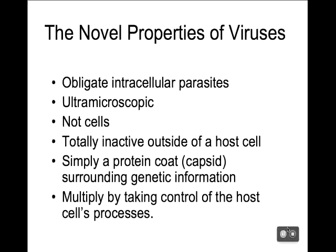How viruses work is they literally take over a host cell. During an infection, they're going to take over that host cell and turn it into a virus-making factory — that's the life cycle that a virus goes through. They are ultra-microscopic, in other words, extremely small. They are much smaller than bacteria. In order to see viruses clearly, you have to use an electron microscope; you cannot see them with a visible light scope. There are no cells in the viral structure — not prokaryote or eukaryote. They're just these little infectious particles, totally inactive, relying on the host cell's enzymes and metabolism.